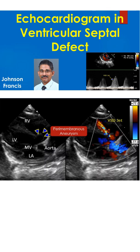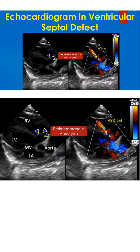Discussion on echocardiogram in ventricular septal defect. Parasternal long axis view shows the subaortic perimembranous ventricular septal aneurysm, marked by arrows. There is a small ventricular septal defect at the apex of the aneurysm, which is not very clear in the 2D image.